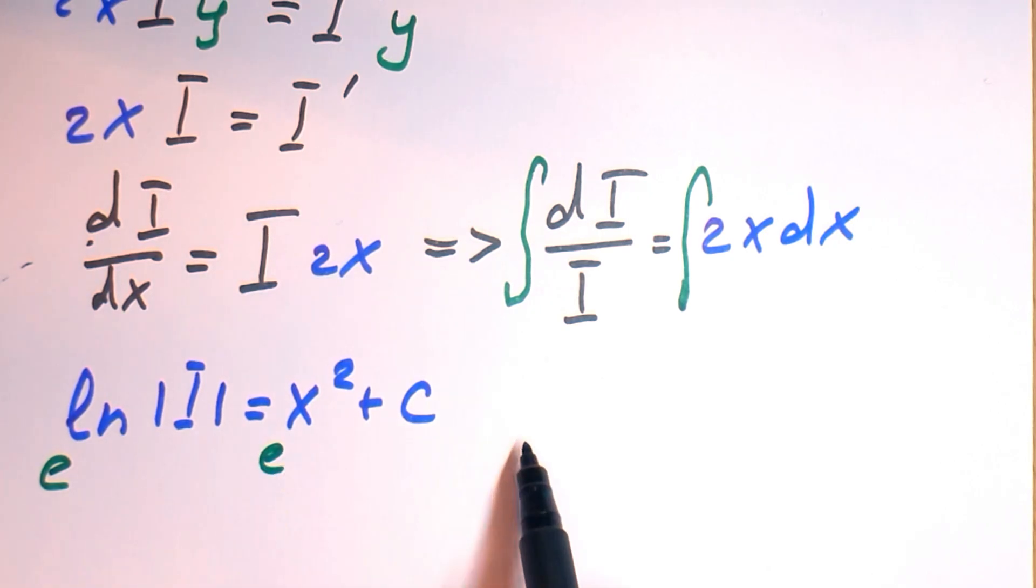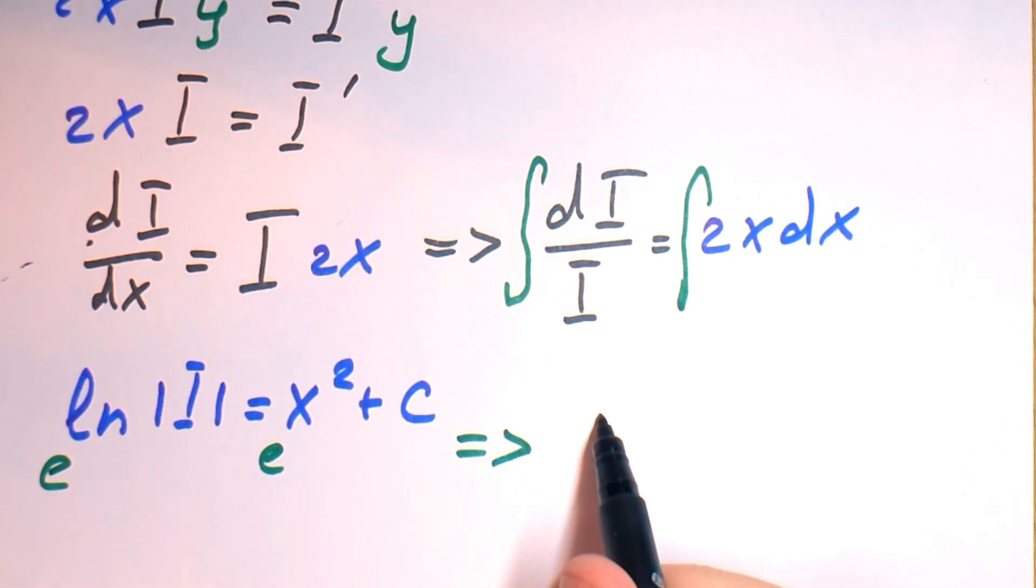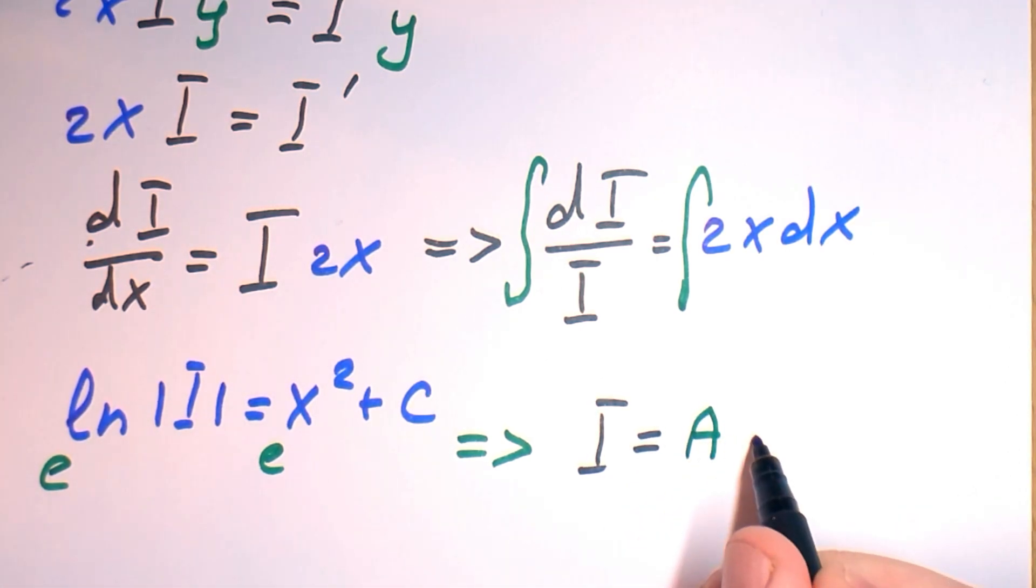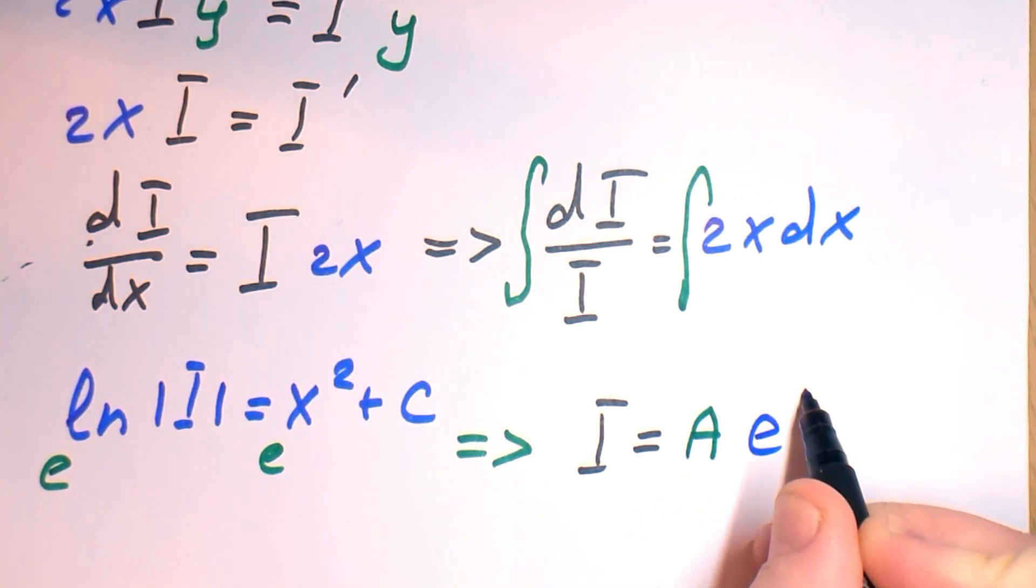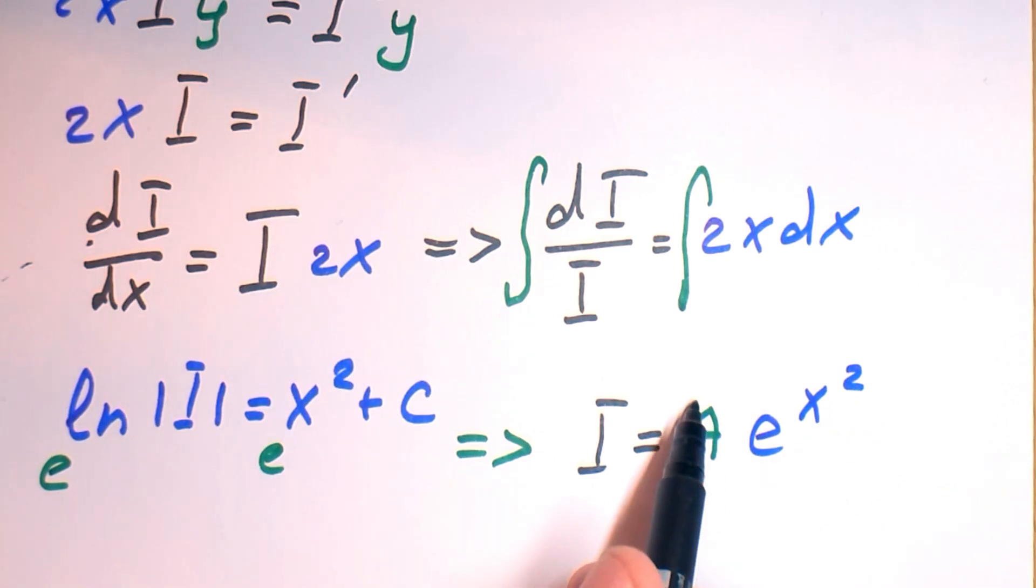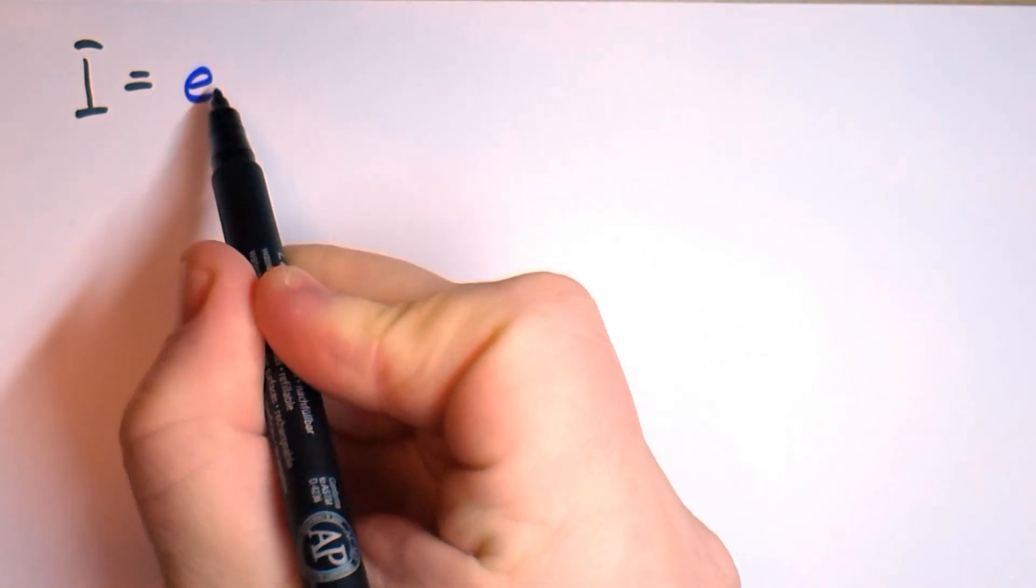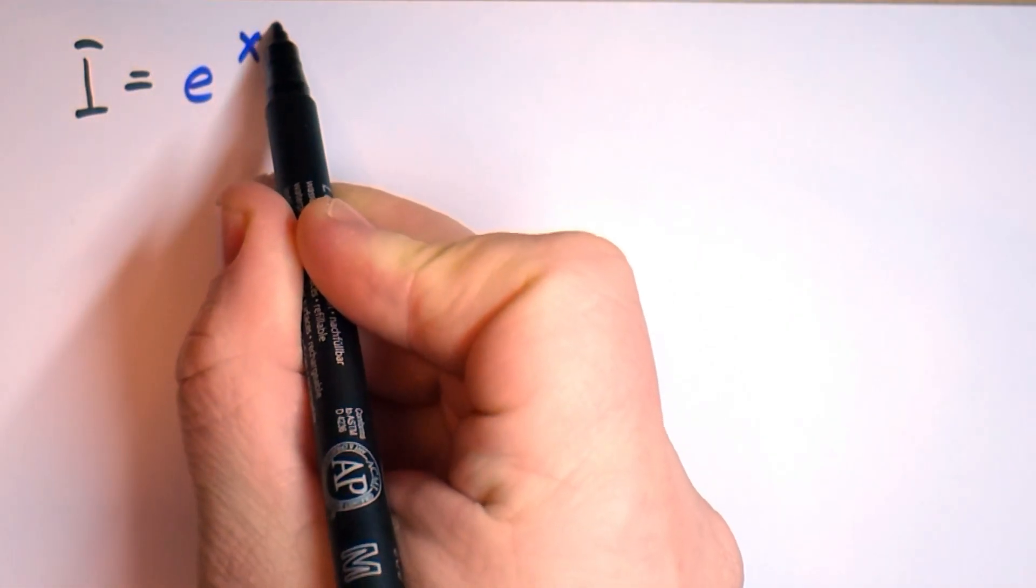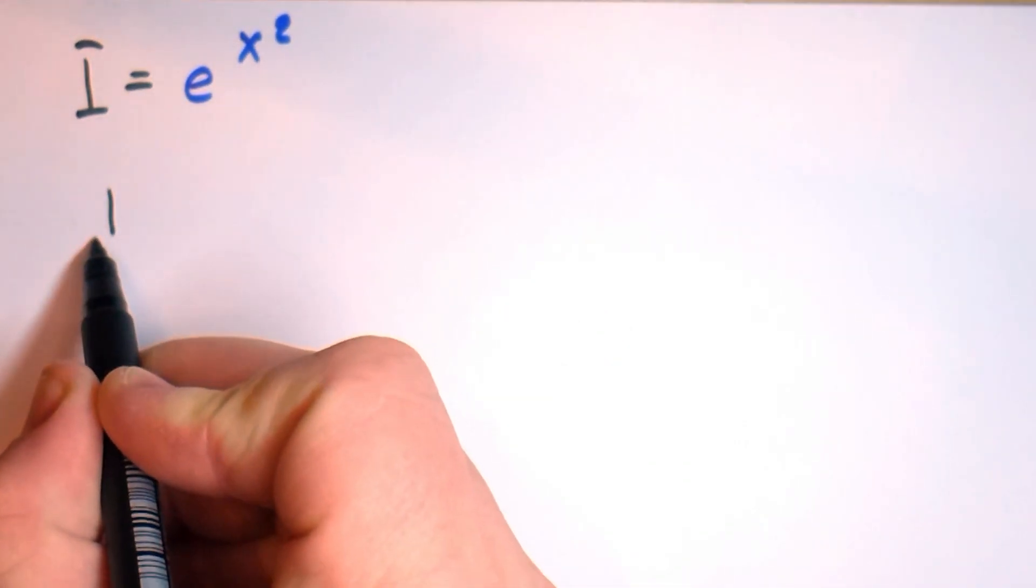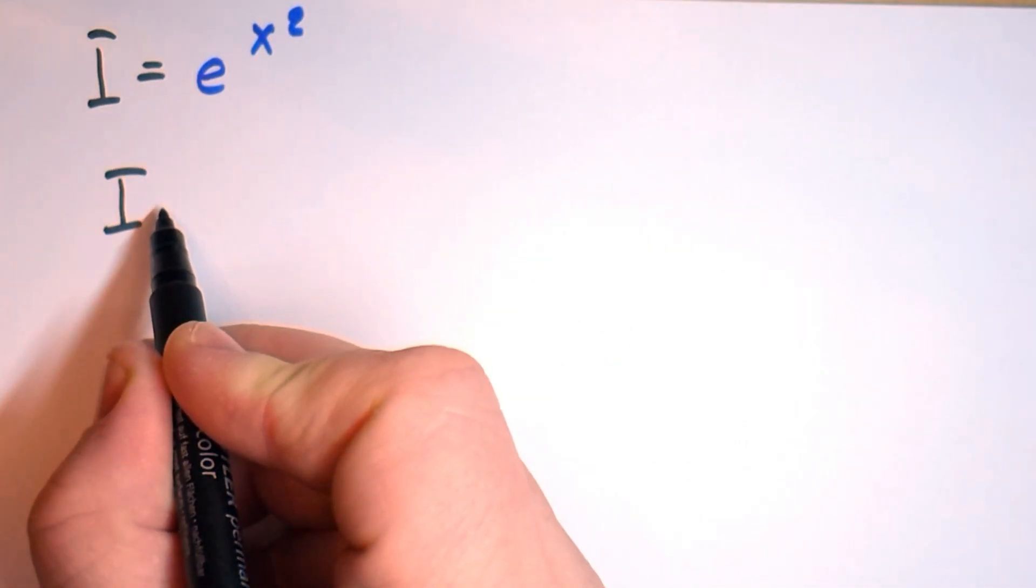And putting exponent to the power of left and right parts we can say that I equals some coefficient a times e to the power x squared. And we can say this coefficient equals 1. In the previous lecture I explained why we can say that a equals 1. And now we can say that integration factor I equals e to the power x squared.